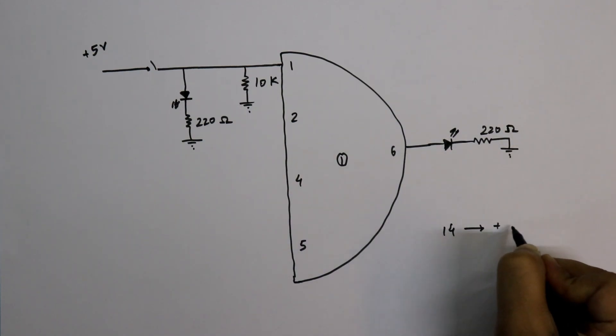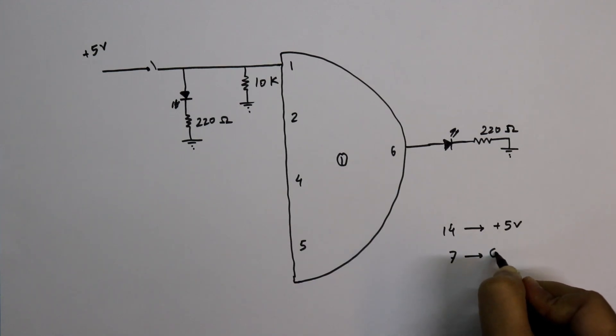With pin number 14 we have to connect plus 5 volt and with pin number 7 we have to connect ground.